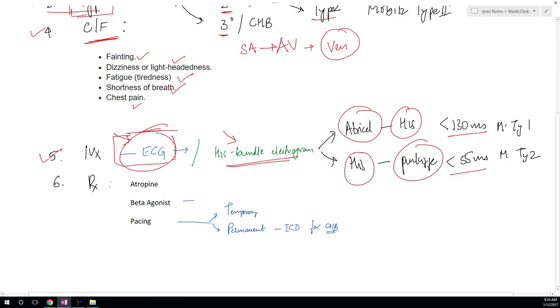The normal timings are less than 130 ms and less than 55 ms. If the AH electrogram is more than 130, it is seen in Mobitz type 1. And HV electrogram is more than 55 ms and it is Mobitz type 2. So these were two investigations useful for the heart block.